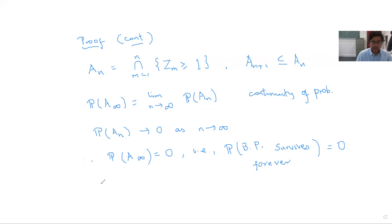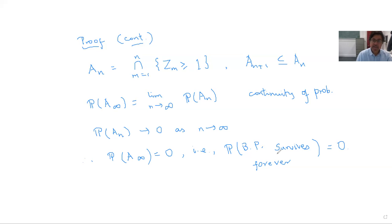So we know what happens if the mean offspring size μ is smaller than 1. Next time we look at what happens if μ > 1. It turns out that then the branching process has positive probability of surviving forever — it's not guaranteed, and it could still go extinct by chance, but with some non-zero probability it survives forever.